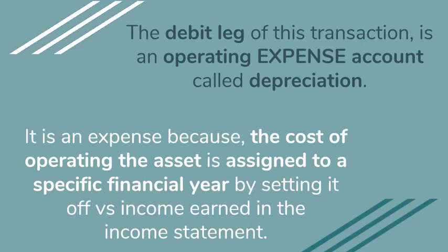So what the business tries to do is it tries to spread out the cost of an asset over the time period that it's using that asset, and so it writes off the cost as an expense a bit by bit over a couple of financial years that follow on each other, so that the entire profit is not depleted the first year when you buy the asset, but that the profit is decreased a little bit every year by the cost of that asset. But this will make sense when we deal with financials.